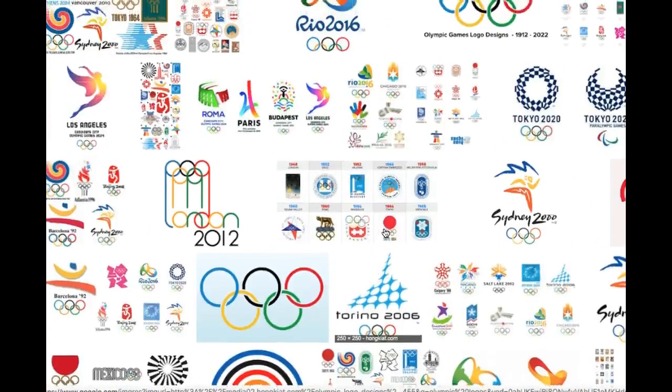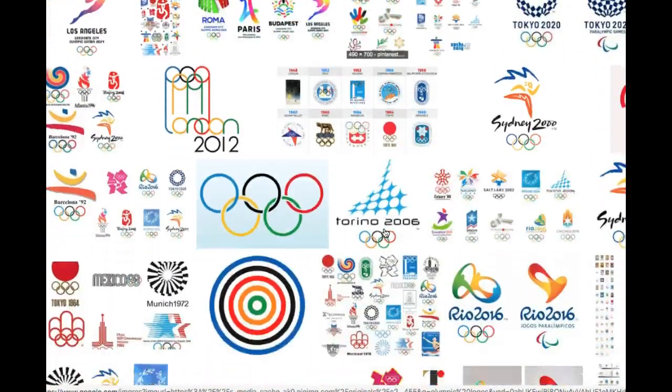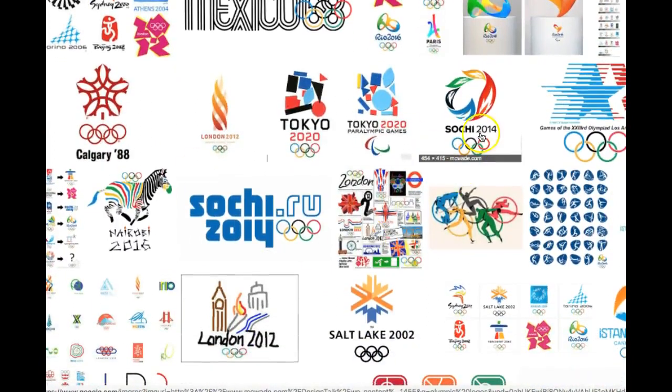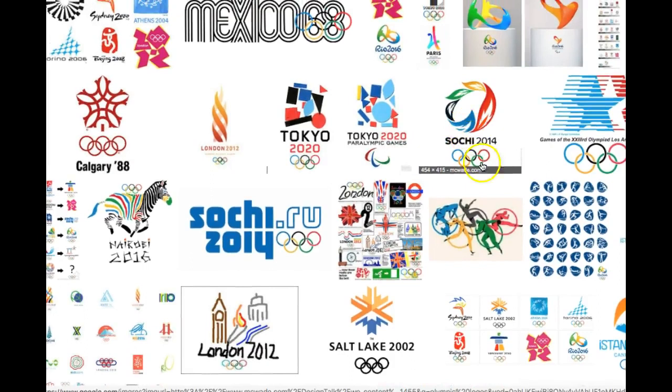One of my favorite logos, honestly, is Sochi 2014. This is fantastic. It's basically an iteration of the rings. It's the ring, the color of the rings. It is a ring, but it's depicted out of these kind of leaves that can also be depicted as Olympic torch flames. So that is a fantastic logo right there.